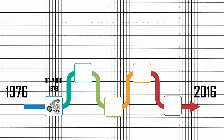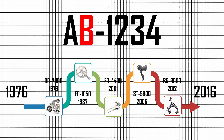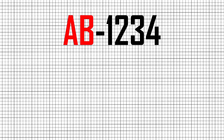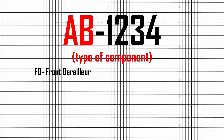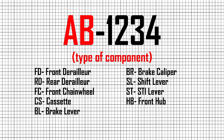Pre-2016 road bike component codes within the groupset range consisted of two letters and four numbers: AB-1234. The first two letters, AB, indicate which type of component it is: FD for front derailleur, RD for rear derailleur, FC for front chainwheel, CS for cassette, BL for brake lever, BR for brake caliper, SL for shift lever, ST for STI (Shimano Total Integration), HB for front hub, FH for freehub body hub.